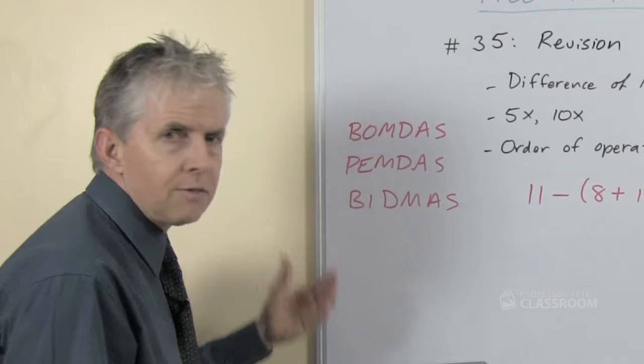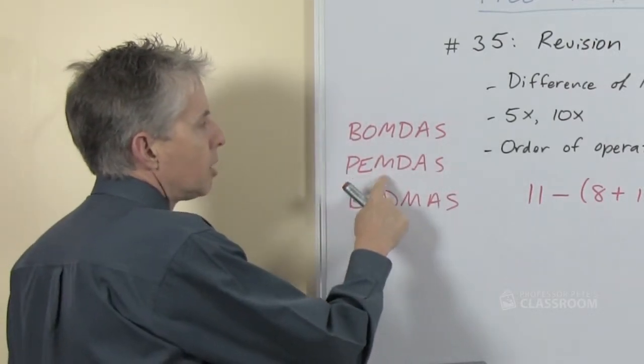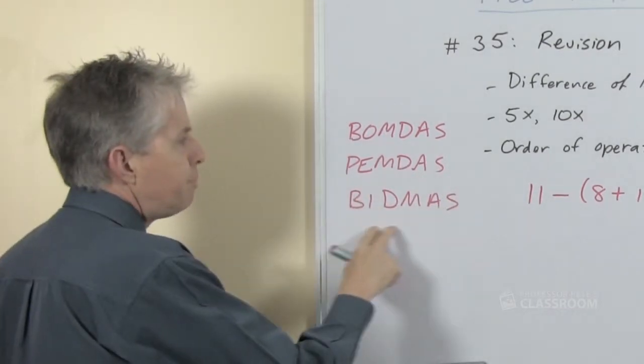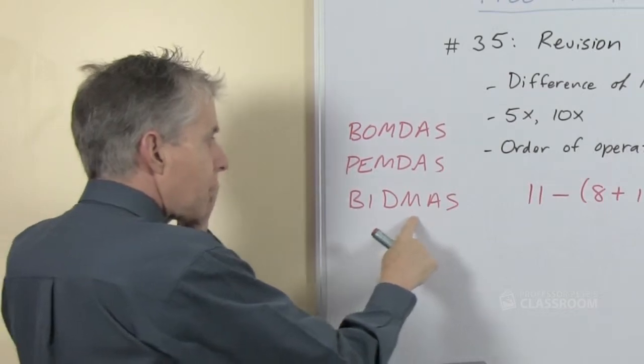The United States commonly uses, I believe, PEMDAS: parentheses, exponents, multiply, divide, add, subtract. And I've come across BIDMAS which apparently is brackets, indices, divide, multiply, add, subtract.